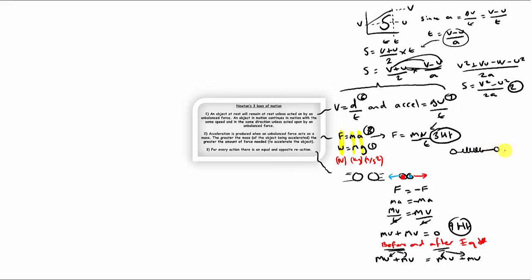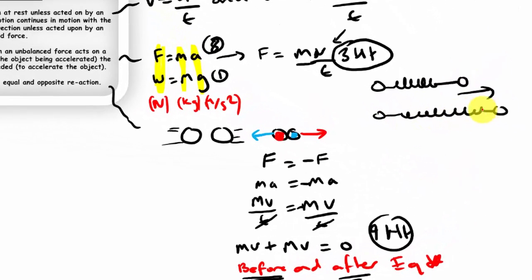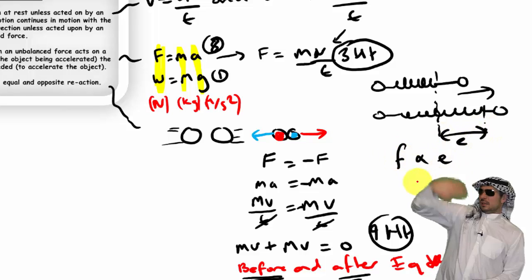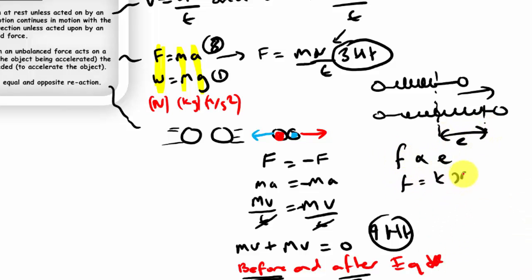Moving on to springs, which is how forces are measured. A guy called Robert Hooke discovered that the amount a spring gets longer by is proportional to the force applied to it. If you put in a constant of proportionality you get the spring constant. This is known as Hooke's law.